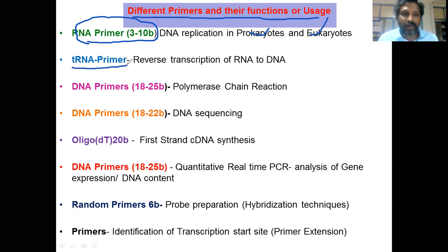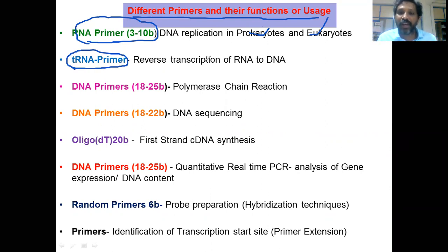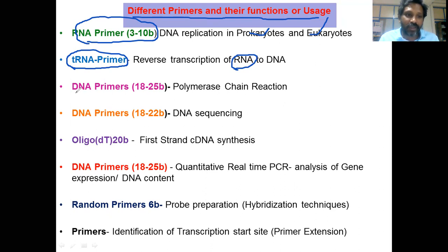The second type is the tRNA primer. tRNA can also act as a primer in reverse transcription of retroviral RNA. When retroviral RNA enters the host cell, the RNA is converted to DNA. In that process, a host tRNA molecule binds to the viral RNA, and reverse transcriptase converts the RNA to a DNA molecule. So tRNA acts as a primer during reverse transcription.